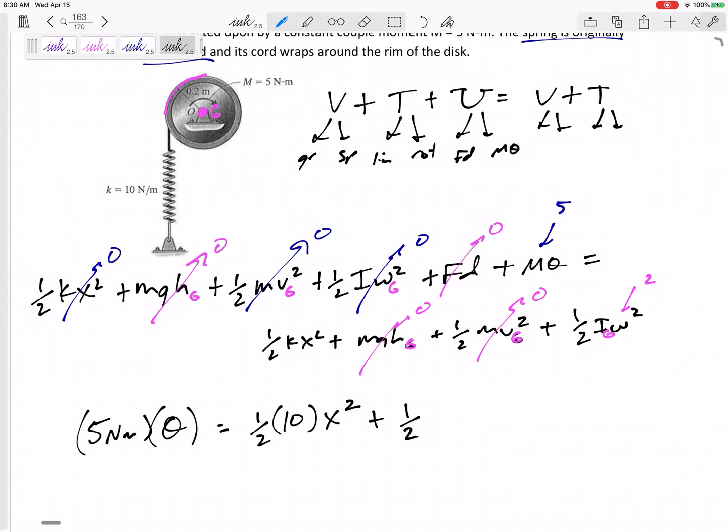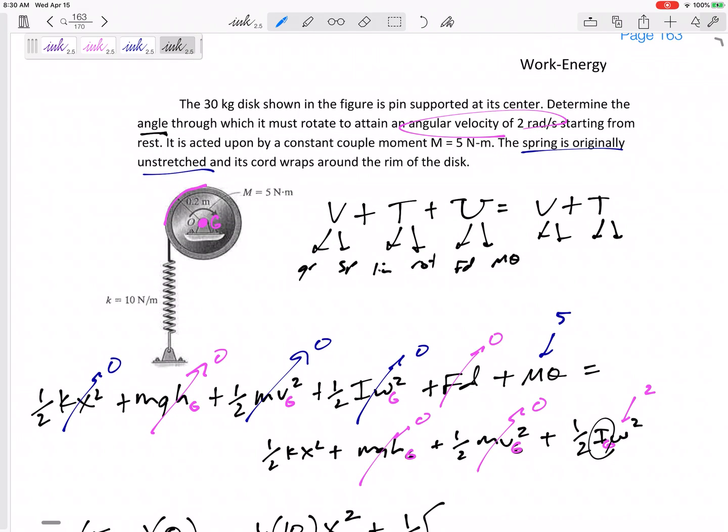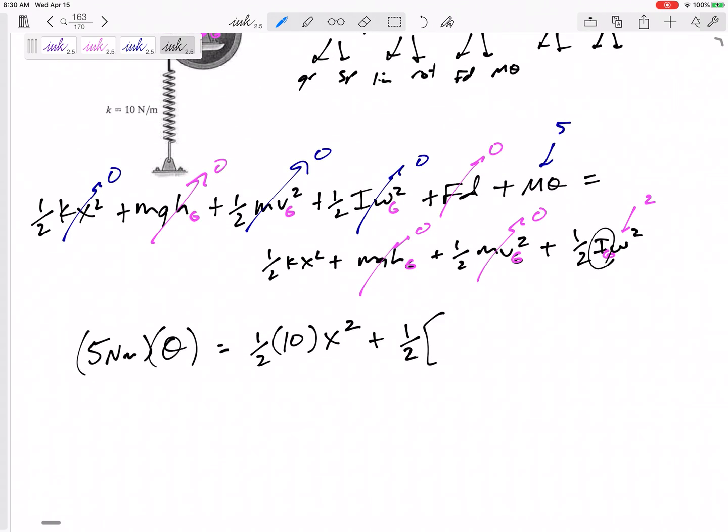But it is rotating. So, this would be one-half I. What is the I? Did it give me a rate of gyration? No. So, we can assume this is a uniform cylinder. And a uniform cylinder is one-half MR squared. So, now let's be careful. I've got a one-half before I get to the I. The I is one-half MR squared. And then omega is 2 squared.